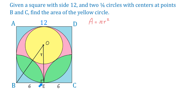The side BE is 6 units. To find the side OE, we take the side of the square, which is 12 units, and subtract the radius of the yellow circle — so OE equals 12 minus R. The hypotenuse is the sum of the radius 6 and the radius R, giving 6 plus R. Once we have each side defined, we will use the Pythagorean theorem to write our equation.